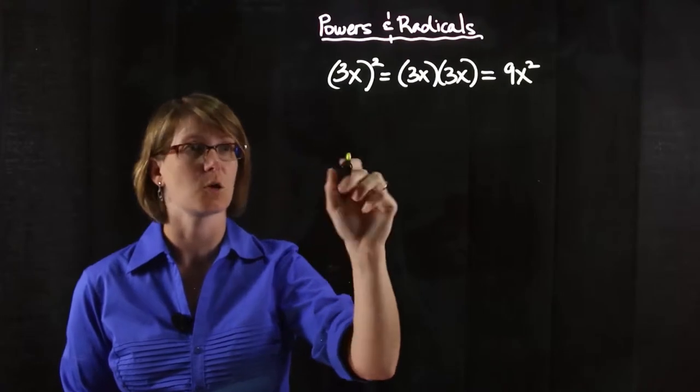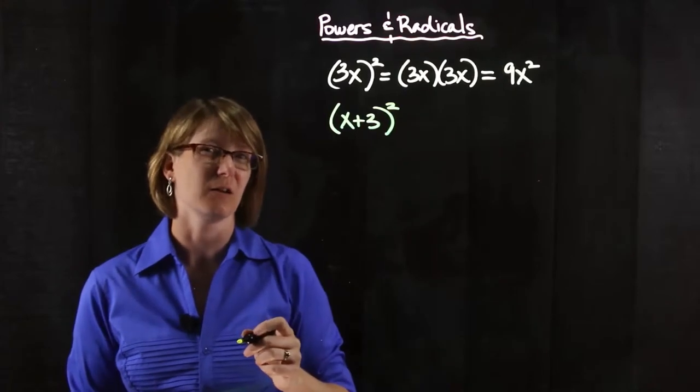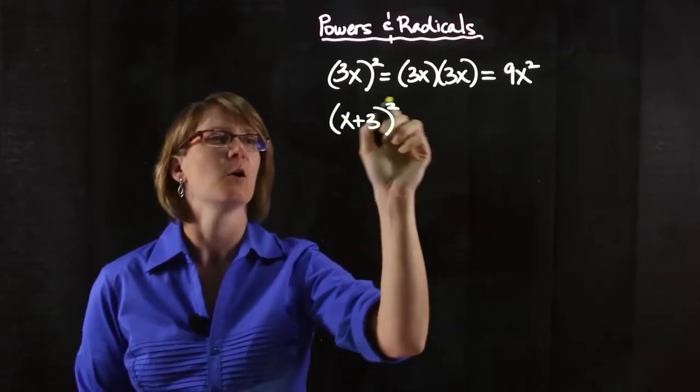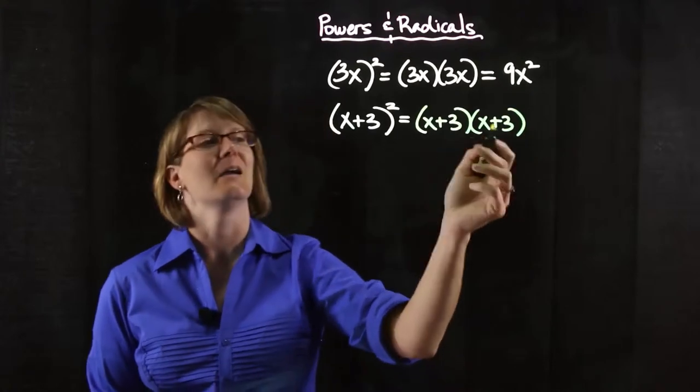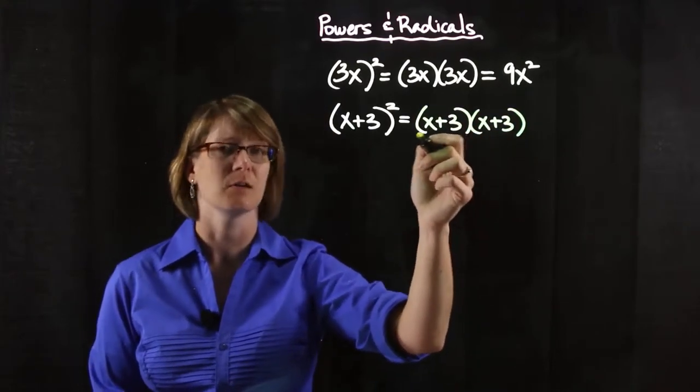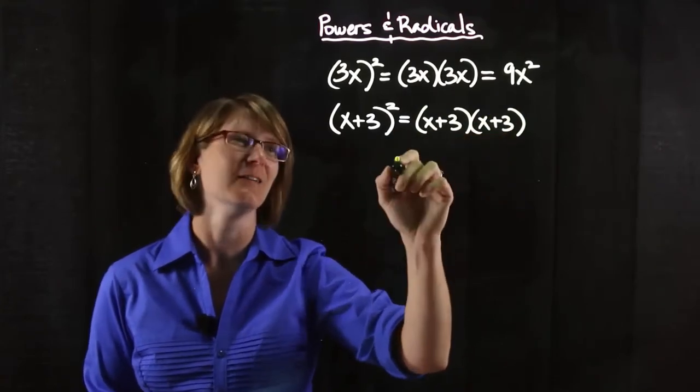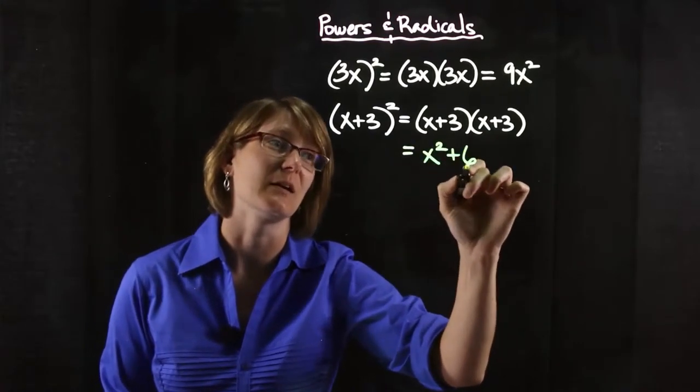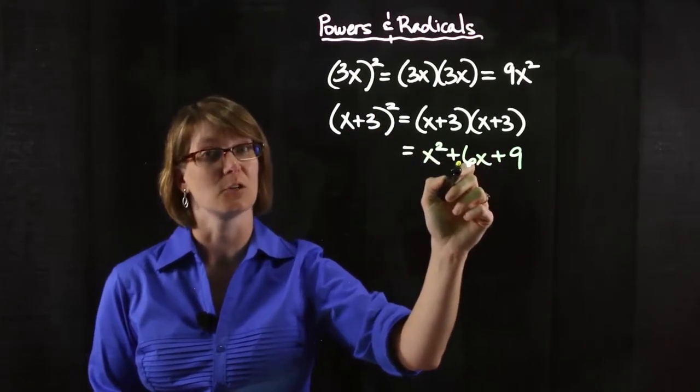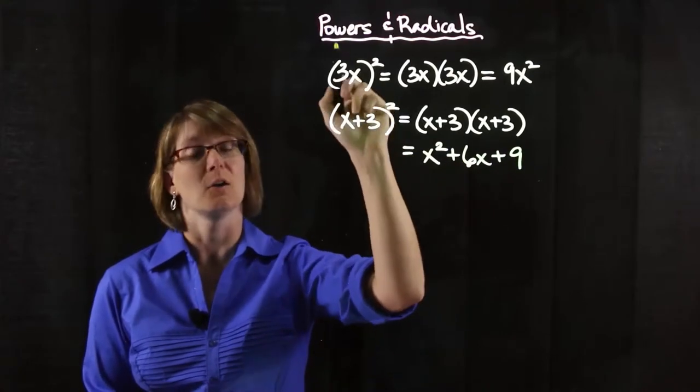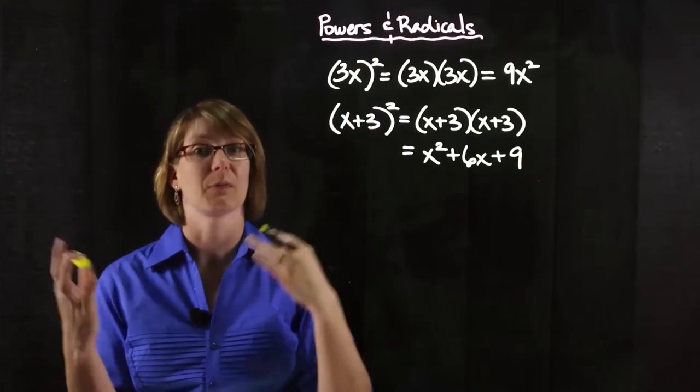But, and this is where usually students go wrong, if we were to add these two things together, x plus 3 squared, you cannot just distribute that square. Because remember, this means we've got to multiply x plus 3 by itself, and then we've got two sets of parentheses, so that's where you're either going to have to distribute, use a box, use everybody's favorite FOIL method, whatever you want to do here. But we're going to end up with x squared plus 6x plus 9. So if you just squared the x and just squared the 3, you're going to be missing this middle term here. So squares or any kind of powers, you can distribute them if you're multiplying or dividing, but if you're adding or subtracting, you're going to have to actually multiply it all out.